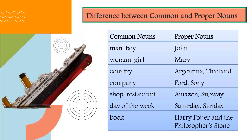Likewise, 'man' and 'boy' are common nouns, but when we say John, it becomes a proper noun as we're talking about a particular boy or man whose name is John. Similarly, Mary is the proper noun for a girl or woman. You can see in the left column general names or common nouns have been given, and right opposite to them you can see their specific names or proper nouns. For example, the word 'book' is a common noun, and if we say 'Harry Potter and the Philosopher's Stone,' it's a proper noun because it's the name of a specific book.